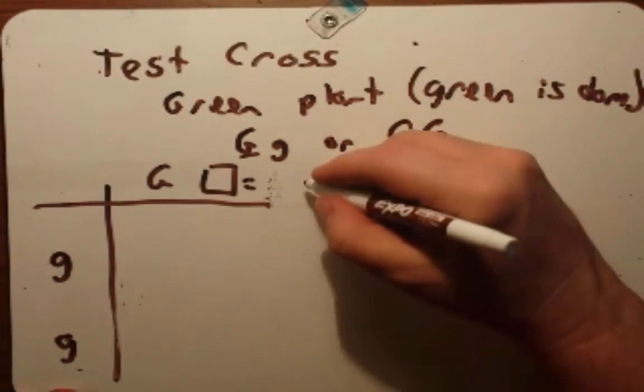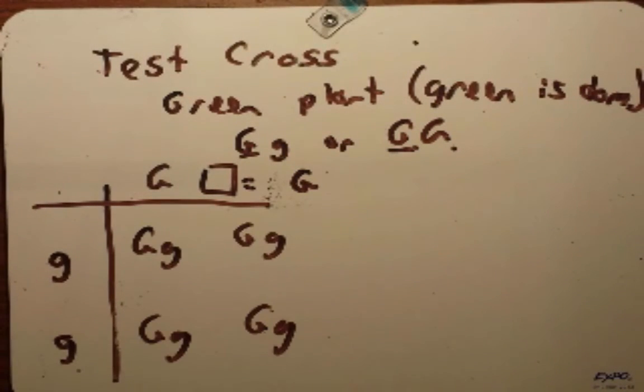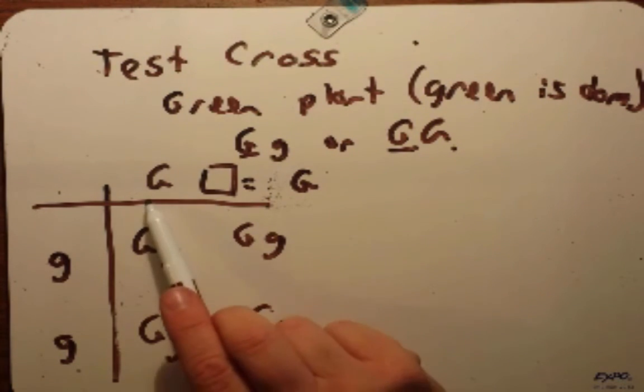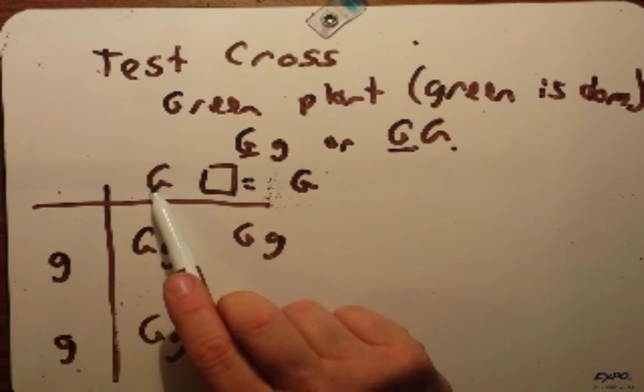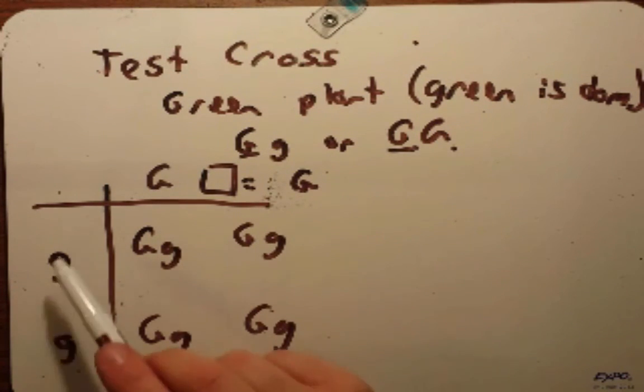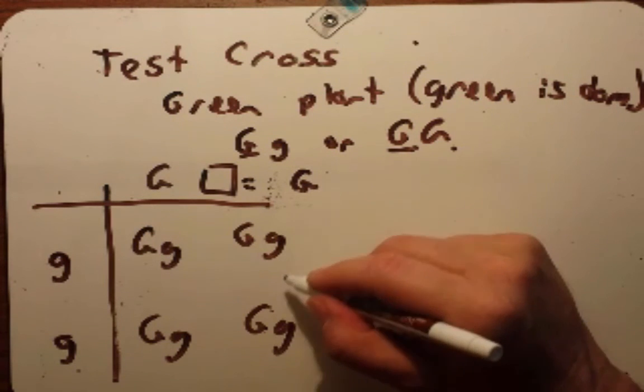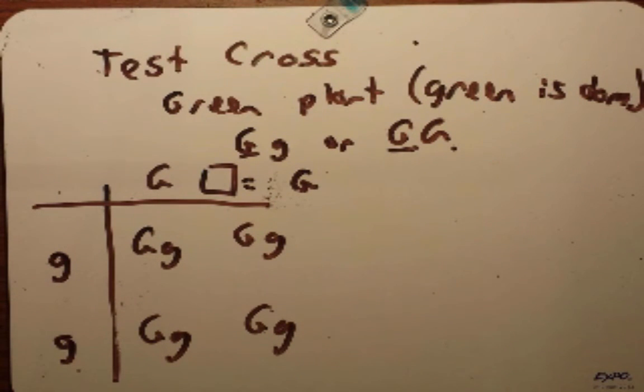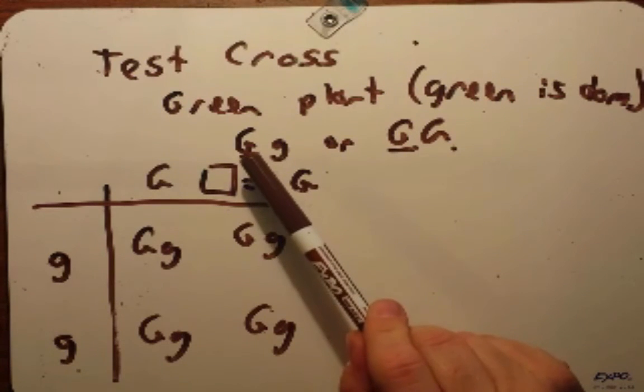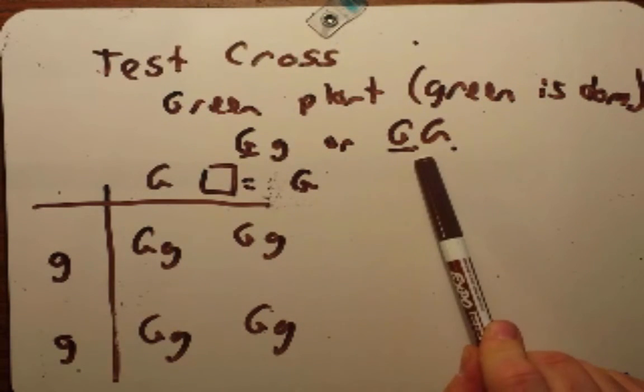What if instead of little g, this one that you didn't know about was actually big G? This time when we did the cross, you can see that each of these possible genotypes are heterozygous. So if in a test cross your unknown strain is homozygous dominant, such as this big G big G, and you do the cross with the test cross strain, you're going to see that each of your four progeny will be wild type. And if you did this a thousand times, you're still going to see this same ratio here, probability.